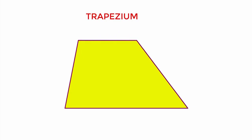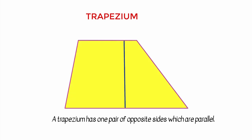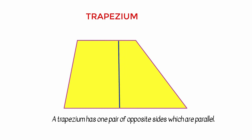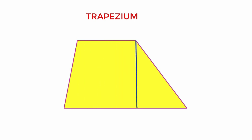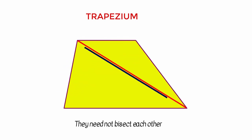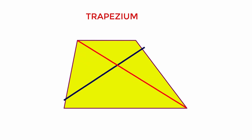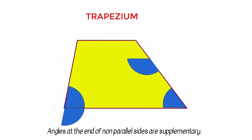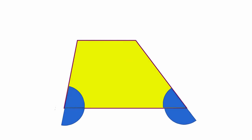If a quadrilateral has one pair of opposite sides which are parallel, what we get is a trapezium. Hence a trapezium has one pair of opposite sides which are parallel. The parallel sides are called the base and the non-parallel sides are called the legs. The diagonals need not be equal and they need not bisect each other. The angles at the ends of each non-parallel sides are supplementary.